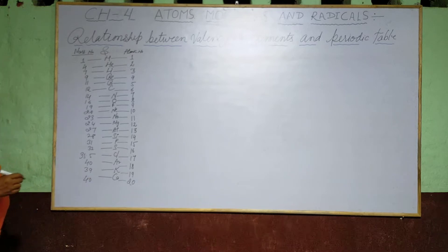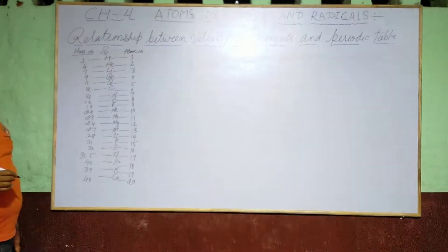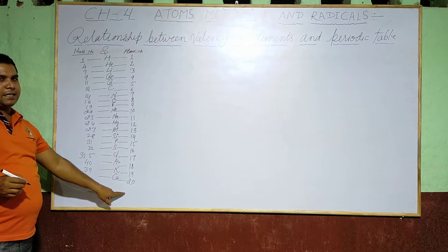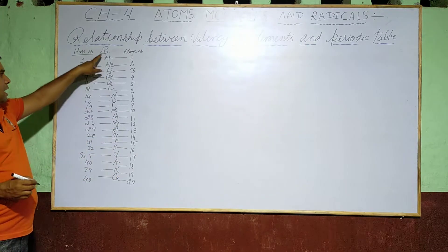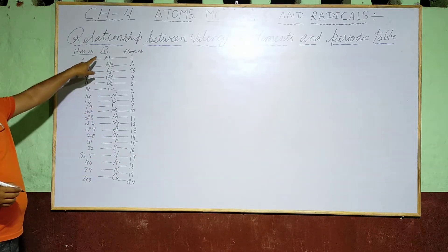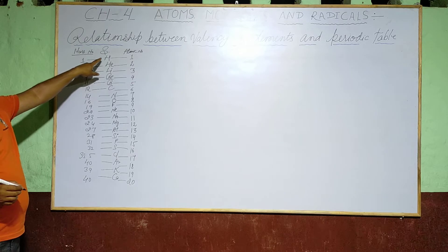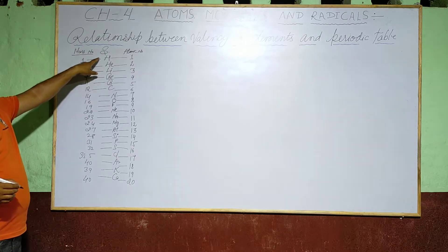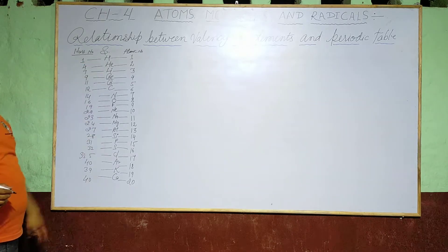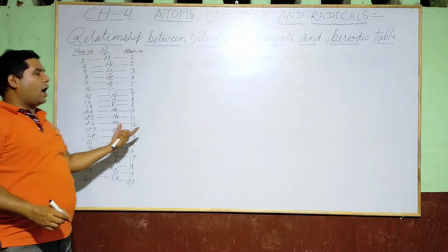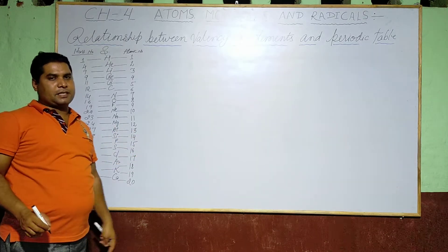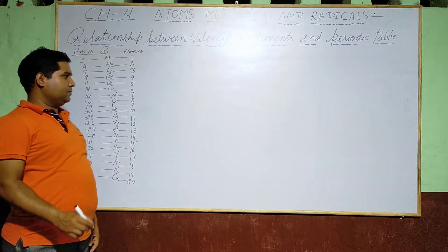So dear student, these are the atomic numbers 1 to 20 that I have arranged here, and according to that I have put the symbol — for example, Hydrogen's symbol is H. Now I am going to explain to you how these elements are placed in the periodic table.